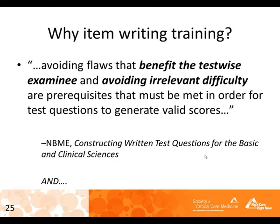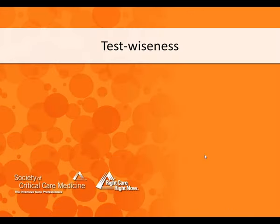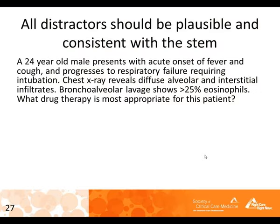Returning to our original goals: we've been talking about irrelevant difficulty — ways to avoid confusing examinees in ways that don't help you tell whether they know the content. Now let's talk about test-wiseness. If you go to one of those test prep courses that major companies offer, they are teaching you test-wiseness — how to out-guess and out-smart test writers. As test writers, you need to be smarter than the examinees, so they can't out-fox you. Let's look at ways to create test questions that aren't easy to guess.